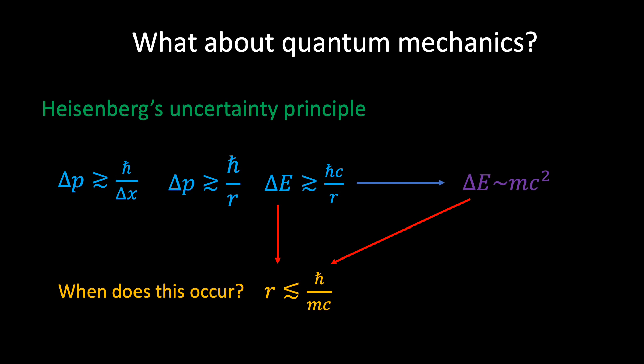If we plug in the numbers, we find a value of order 10 to the minus 13 metres, which is smaller than a typical atom (roughly 10 to the minus 10 metres), but not quite as small as the nucleus (which is of order 10 to the minus 15 metres). This is telling us that as we squeeze the two electrons closer together, when the separation gets smaller than roughly 10 to the minus 13 metres, quantum mechanical uncertainty becomes significant enough to cause the creation of mass. We have now crossed over into a region in which both the laws of quantum mechanics and the laws of relativity become important.